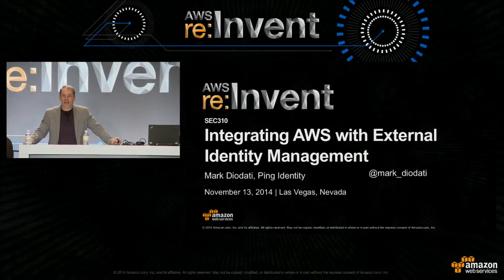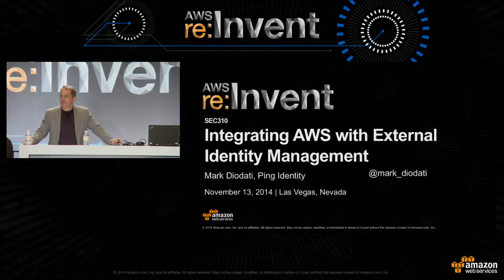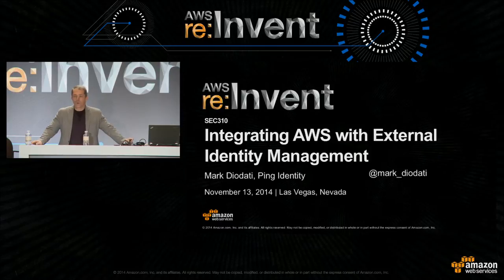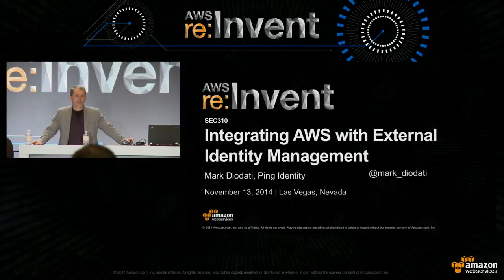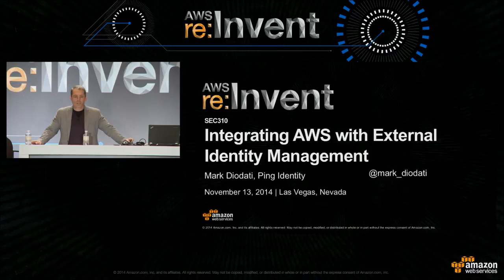My name's Mark Diodati. I work at Ping Identity in the CTO office. I've been there a couple years. Before that, I was Research VP at Gartner, where I focused on a number of different identity and access management initiatives, including the first real research into the IAM services within AWS. I've been covering this market a long time, and I'm grateful to have the opportunity to come speak here.